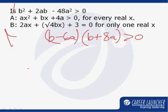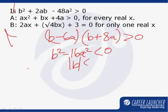Discriminant less than 0 means b² - 16a² has to be less than 0, or modulus of b has to be less than modulus of 4a. Another thing which we also know from here is that since it is always positive, a has to be positive.